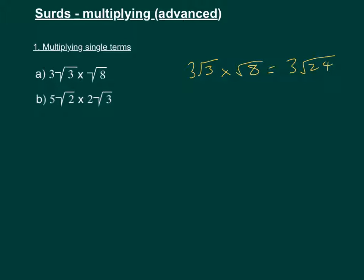This will simplify to be 3 times 3 root 4 times 6, which will give us 3 times 2 root 6, which is 6 root 6.